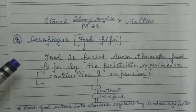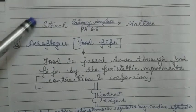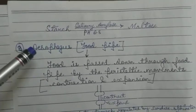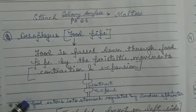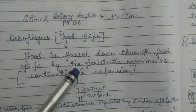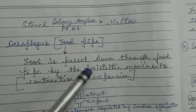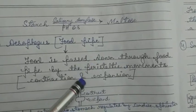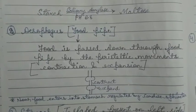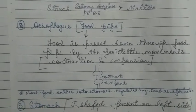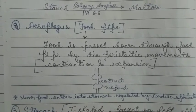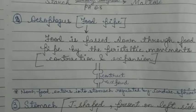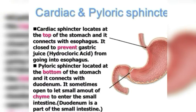After the digestion of starch in the mouth, food enters the esophagus — the food pipe. Food passes through the food pipe into the stomach via contraction and expansion movements known as peristaltic movements. Special muscles in the food pipe pass food downward through their contraction and relaxation movements.